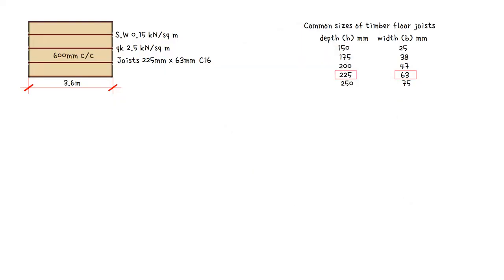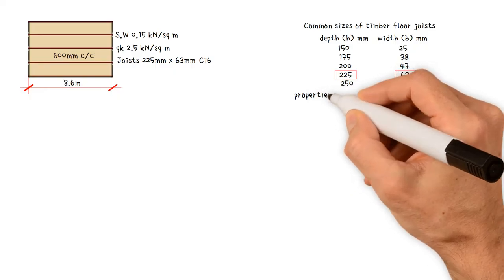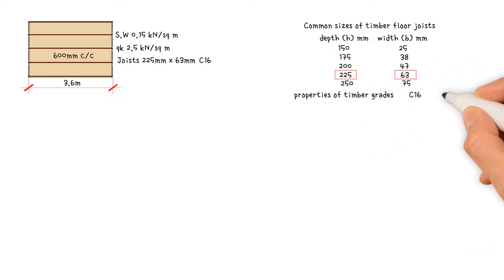In the United Kingdom, softwood floor joists are typically sawn and graded in two strength classes: C-16 and C-24. C-16 is the more common grade but weaker class, making it easier and less expensive to obtain. C-24 is a little stronger but more expensive, and is typically used where geometry and depth of floor construction play a significant role in the structure's design. The material properties of C-16 and C-24 timber are given in the table below.